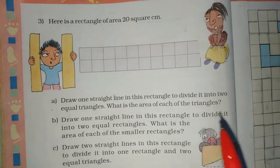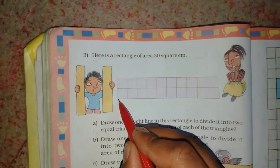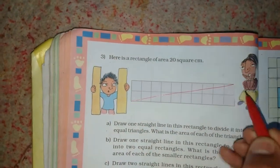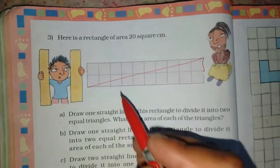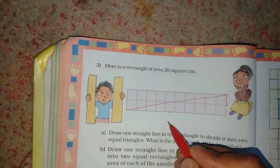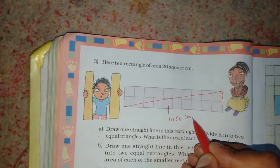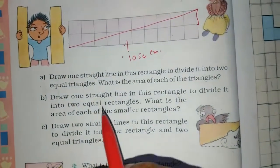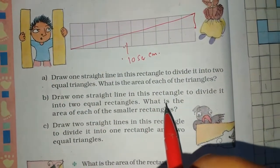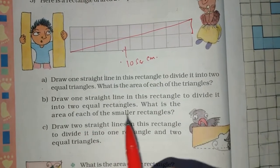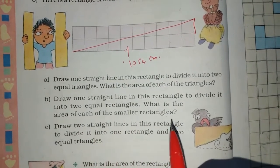What is the area of each of the triangles? Draw one straight line in this rectangle to divide it into two equal rectangles. What is the area of each of the smaller rectangles?